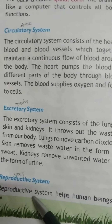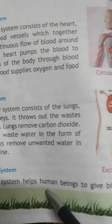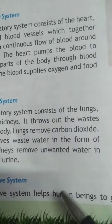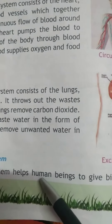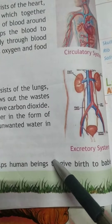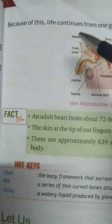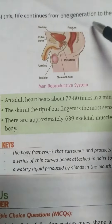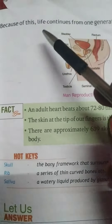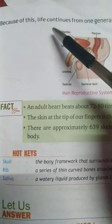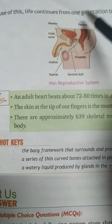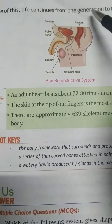Reproductive system helps human beings to give birth to babies. جو reproductive system ہوتا ہے وہ مانوہ کی babies کو جنم دینے میں help کرتا ہے. Because of this, life continues from one generation to the next. یعنی کہ reproductive system کی وجہ سے جو جیوان ہوتا ہے وہ ایک generation سے دوسری generation تک چلتا رہتا ہے.